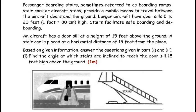Passenger boarding stairs, sometimes referred to as boarding ramps, staircars or aircraft steps, provide a mobile means to travel between the aircraft door and the ground. Larger aircraft have dorsals 5 to 20 feet high (1 foot = 30 cm). An aircraft has a dorsal at a height of 15 feet above the ground and a staircar is placed at a horizontal distance of 15 feet from the plane. Find the angle at which the stairs are inclined to reach the dorsal 15 feet high above the ground.